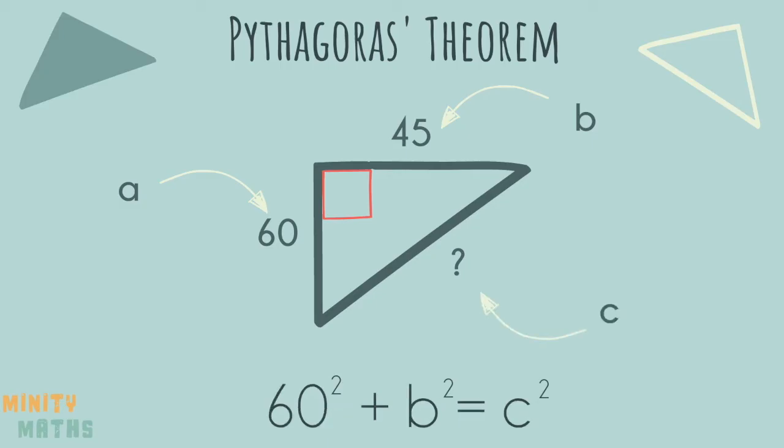Next we put the numbers into the formula. So here we have 60 squared add 45 squared equals c squared. Use a calculator or pen and paper to square the numbers.